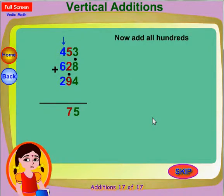Now we will add all the numbers in hundreds place: 2, 6 and 4. Before that, see how many dots are there in the tens place. There is 1 dot. So first add 1 to 2. You get 3.